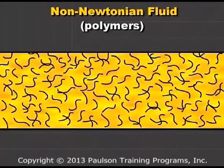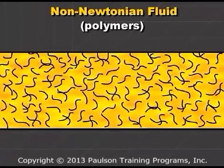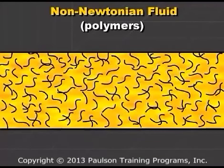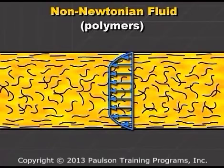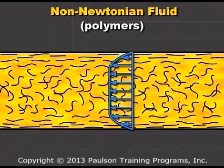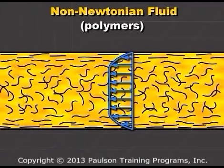Remember, plastic molecules at rest are entangled. They cannot easily slide past one another, so the resistance to flow is high. When flow occurs, they start to untangle and become aligned. When they align or orient, there is much less friction between them, and they flow more easily. This is a reduction in viscosity.